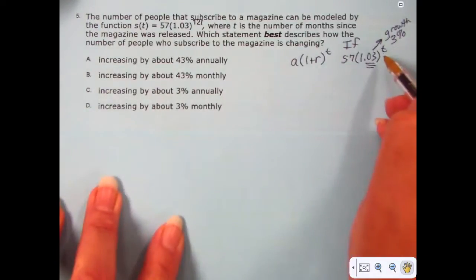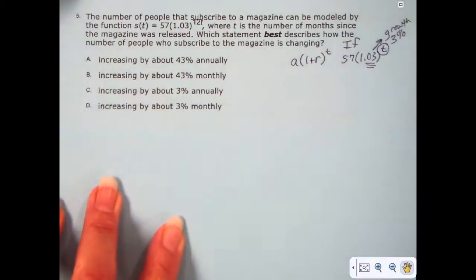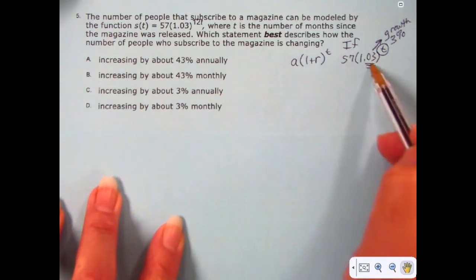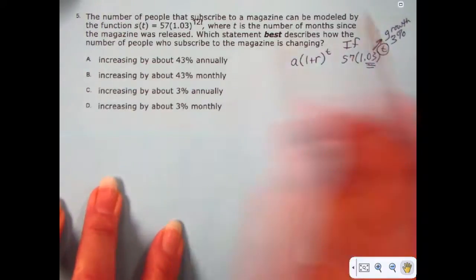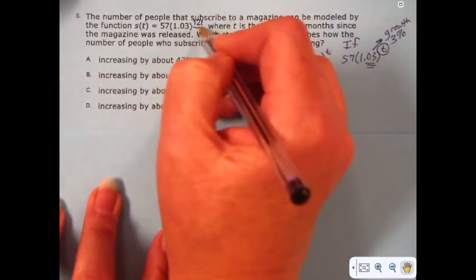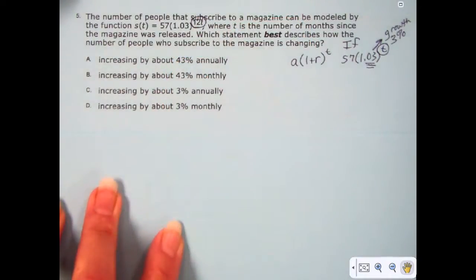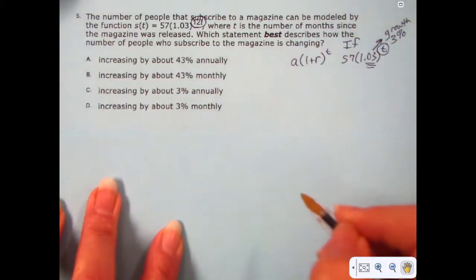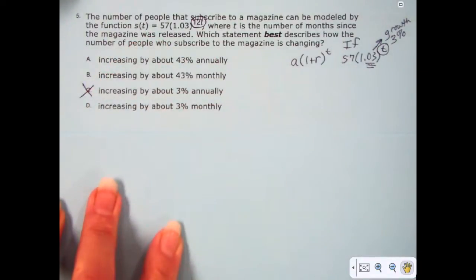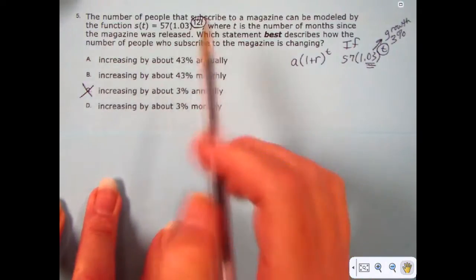If the exponent was T all by itself, it has to be T all by itself for you to take the growth directly from what you see in the parentheses in the exponential formula. Because this formula has 12T for the exponent, this is not the way we would do this problem. And C would be the most often chosen answer, but it is not correct for this problem because the exponent is not T.